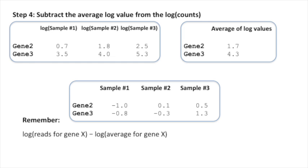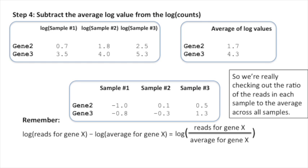Remember, when we subtract the log of one value from the log of another value, that's the same thing as the log of dividing those two values, or the ratio of those two values. So we're really checking out the ratio of the reads in each sample to the average across all samples. This will allow us to identify genes within each sample that are expressed at levels significantly higher than the average, or close to the average, or significantly less than the average.